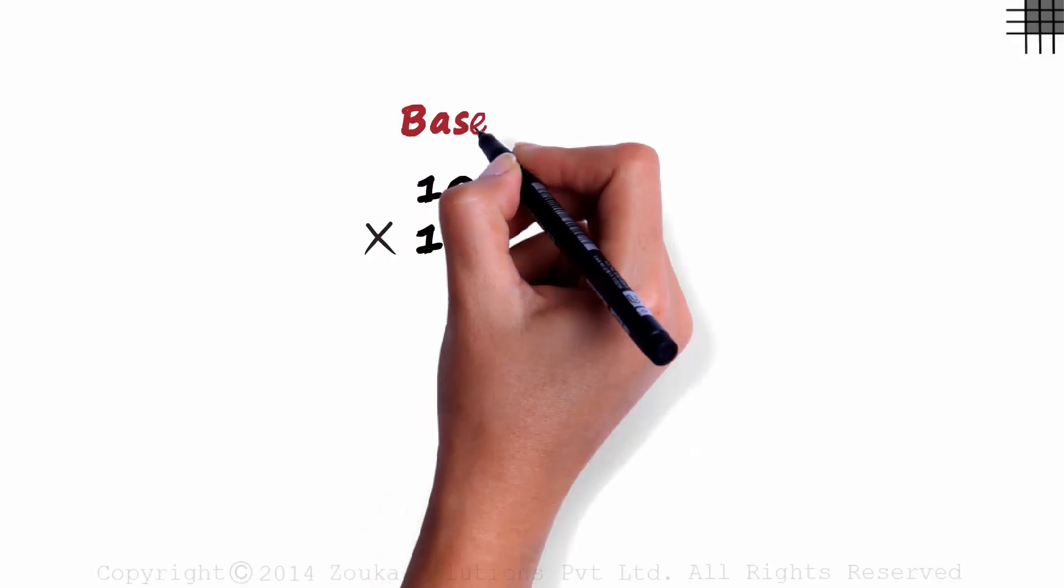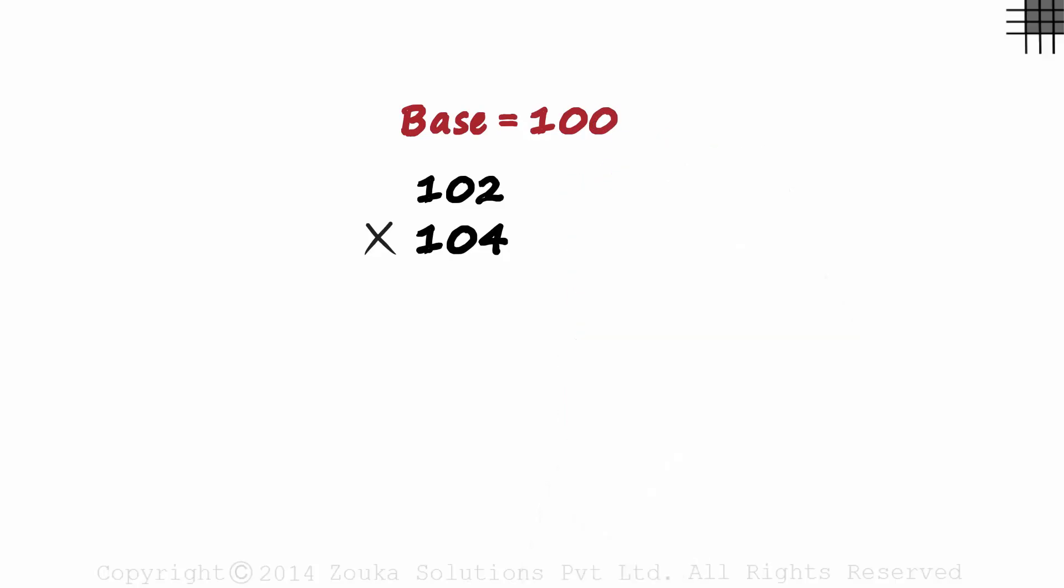With the same technique, try multiplying 102 with 104. As both numbers are close to 100, let's take 100 as the base here. The deviation of 102 from 100 is 2 and that of 104 from 100 is 4.